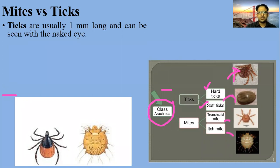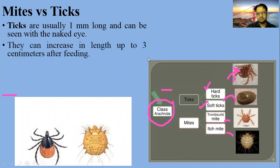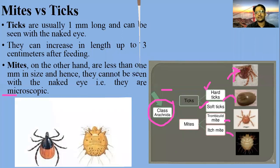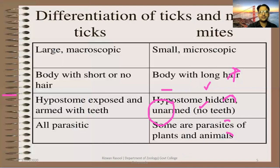Ticks are usually 1 mm long and can be seen with the naked eye. They can increase in length up to 3 cm after feeding. Mites, on the other hand, are less than 1 mm in size and hence cannot be seen with the naked eye — they are microscopic. You can differentiate between ticks and mites on this basis.